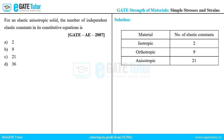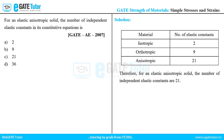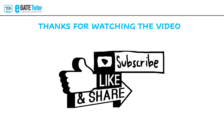Therefore, according to the question, for an elastic anisotropic solid, the number of independent elastic constants required for its constitutive equations are 21. Therefore, the correct option to this question is option C. Thank you.